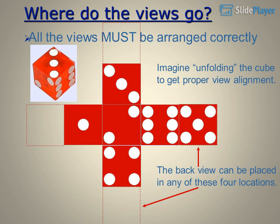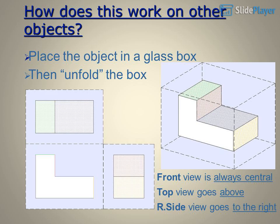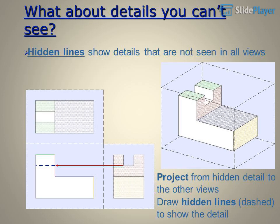Place the object in a glass box, then unfold the box. The front view is always central, the top view goes above, and the right side view goes to the right. For hidden details, project from the hidden detail to the other views and draw hidden lines dashed to show the detail.